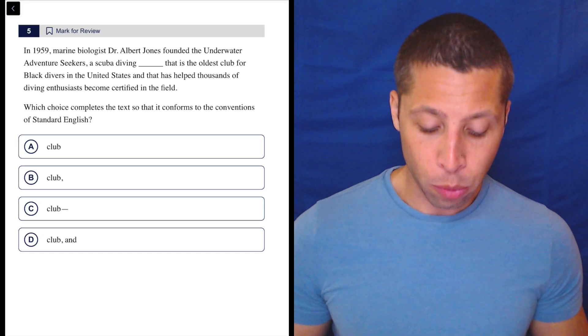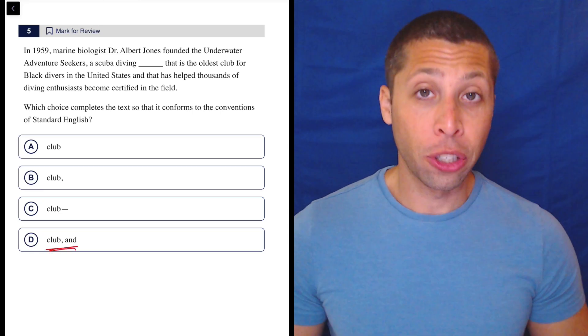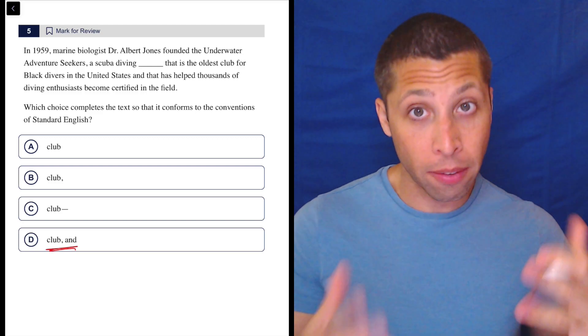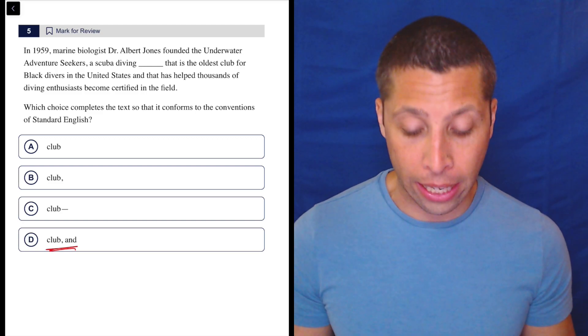The first thing I noticed looking at this question is choice D, which includes a comma and the word 'and.' That has two possible functions. One is if we have a list of three or more things, but more likely, this is used to join two sentences.